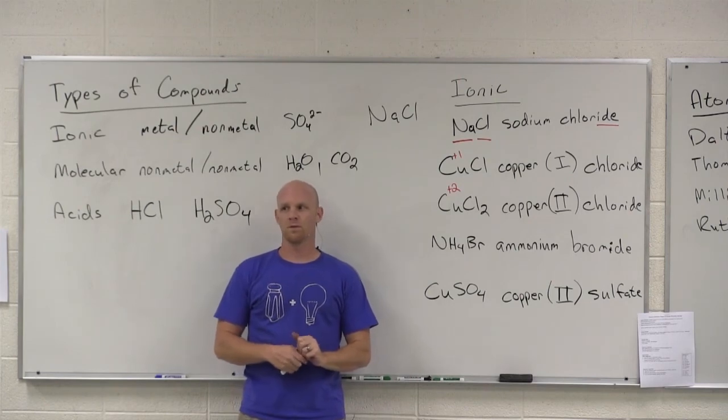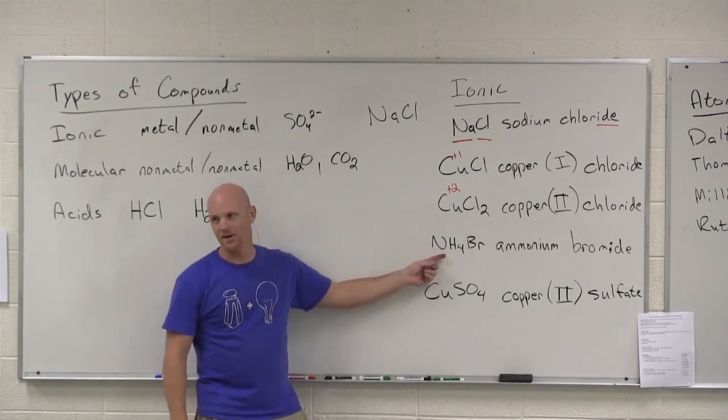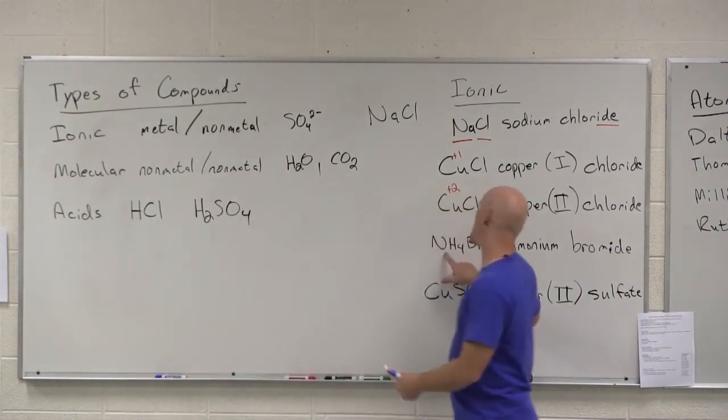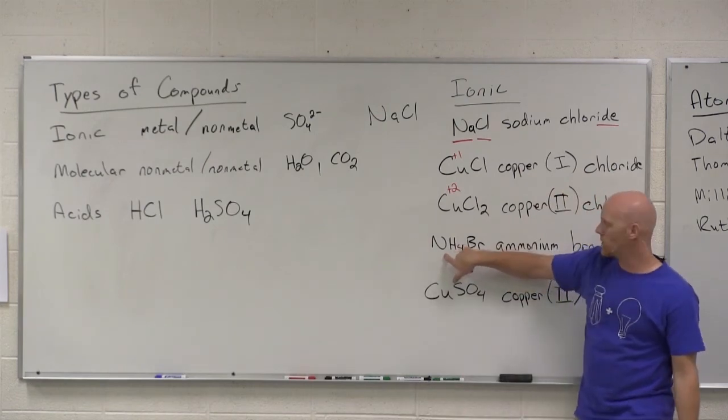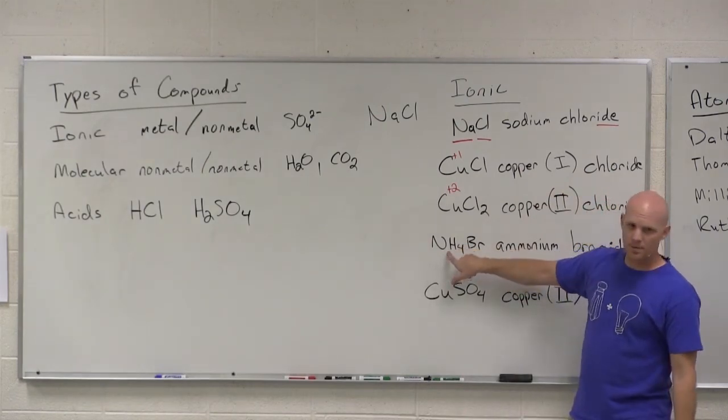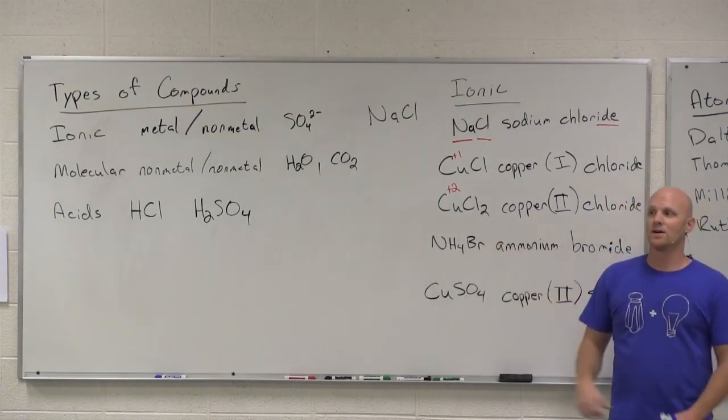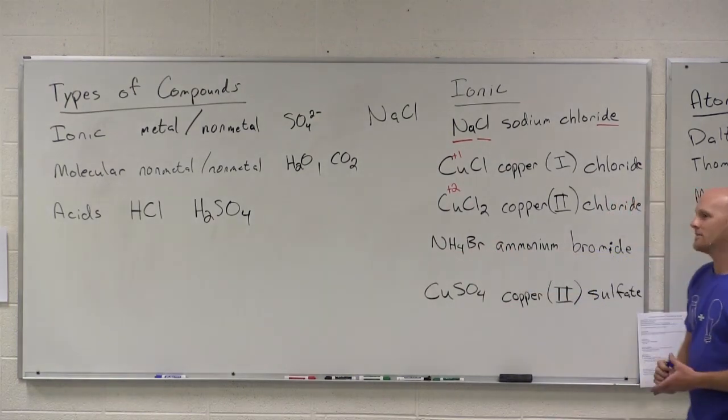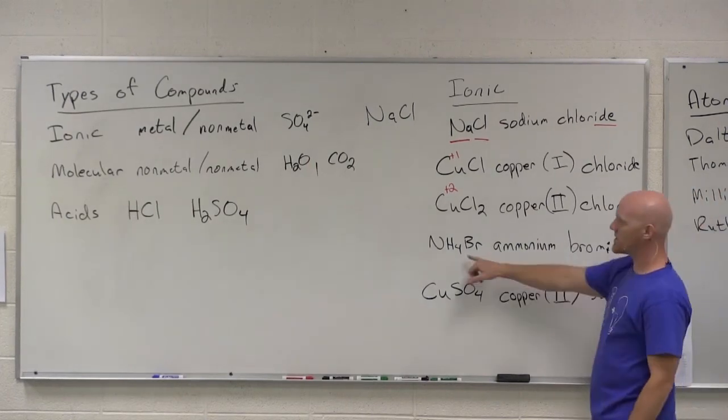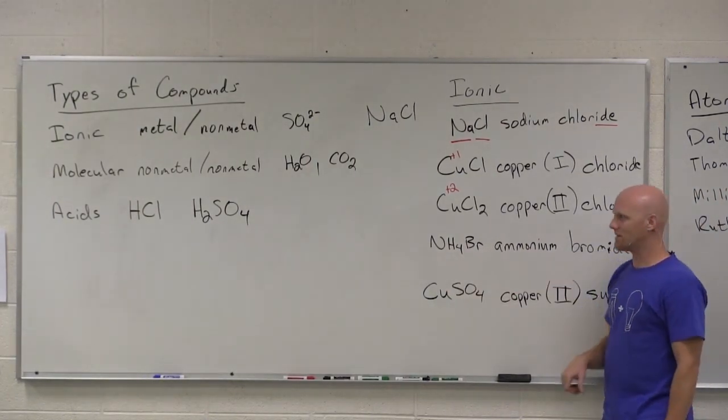Because we've got a polyatomic ion here. So ammonium is the only polyatomic cation of note that you need to worry about. So when I throw an ammonium ionic compound in there, I have all nonmetals, but it's still ionic. Great trick question on the exam. If I say which of the following is ionic, if I want to make it tricky, I throw an ammonium salt in there. Be careful.